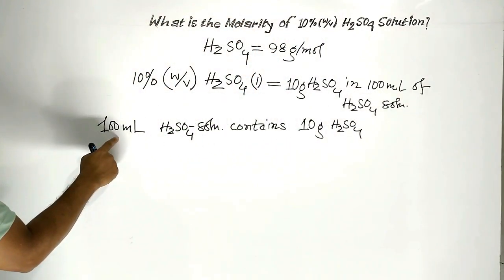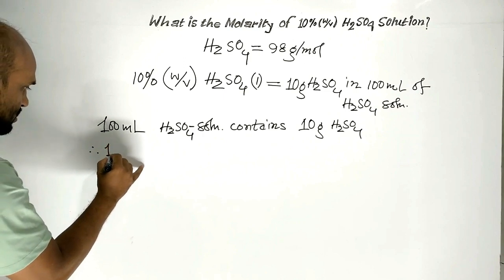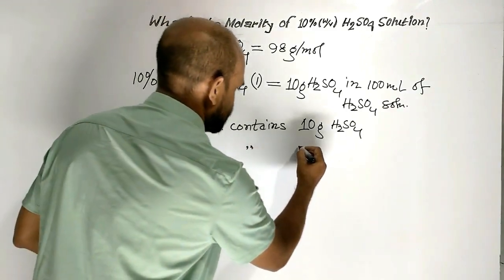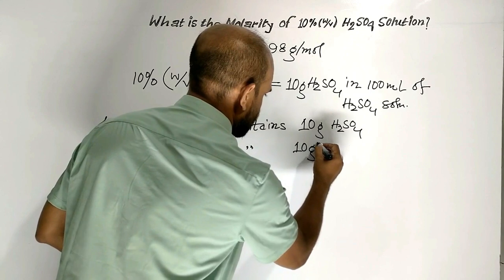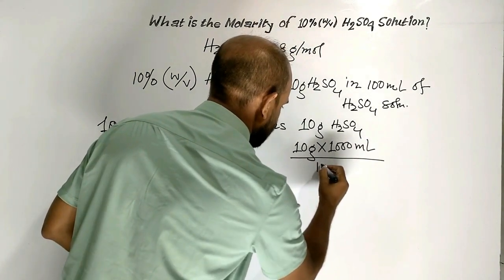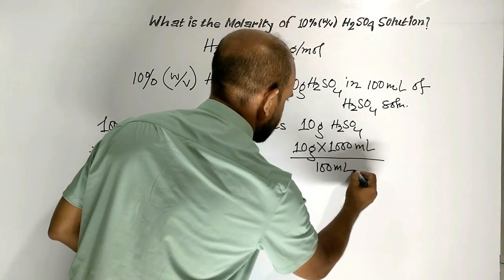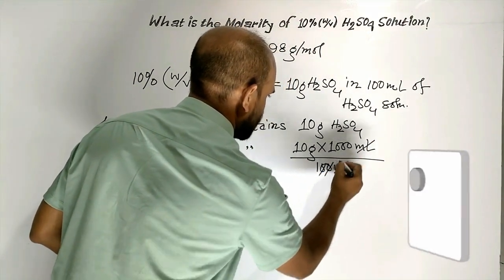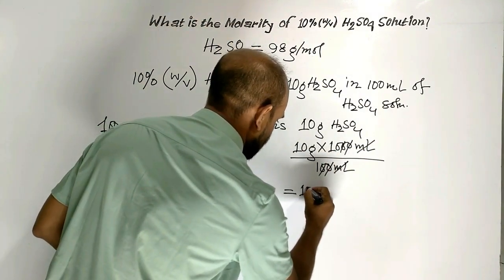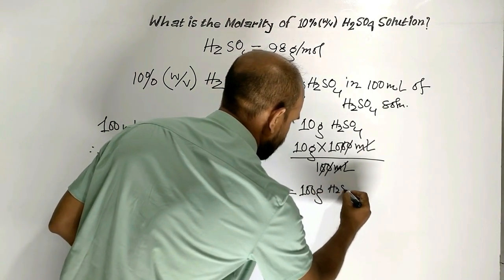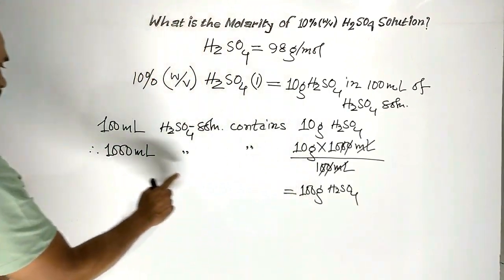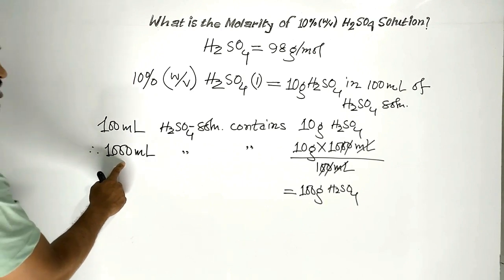Following the unitary method, 1000 milliliters of sulfuric acid solution contains 10 grams times 1000 divided by 100. After canceling units, we get 100 grams of sulfuric acid dissolved in 1000 milliliters of solution.